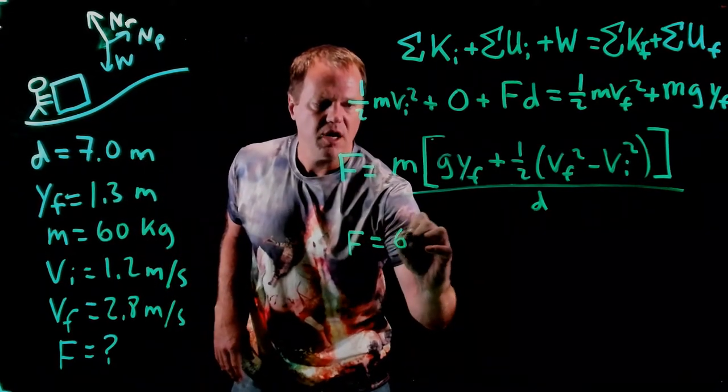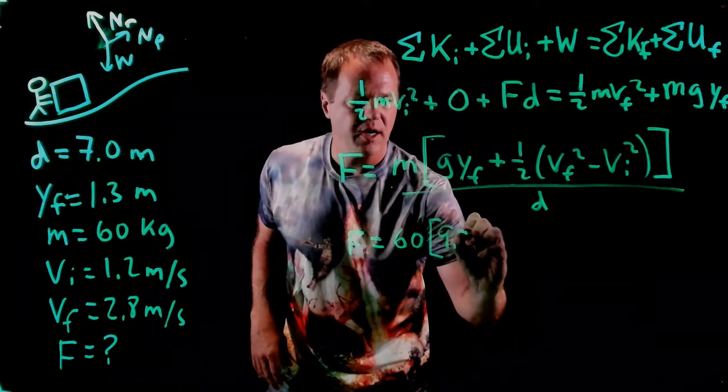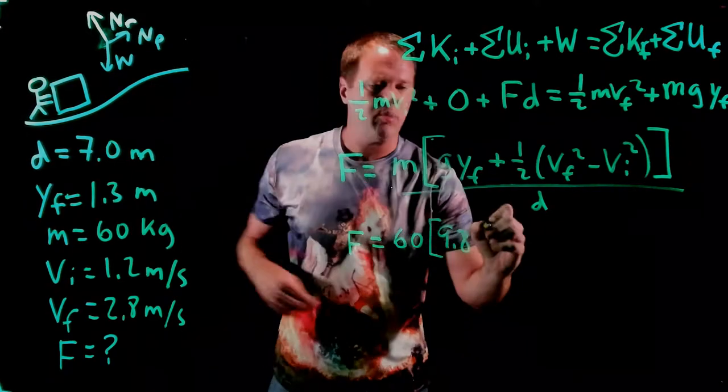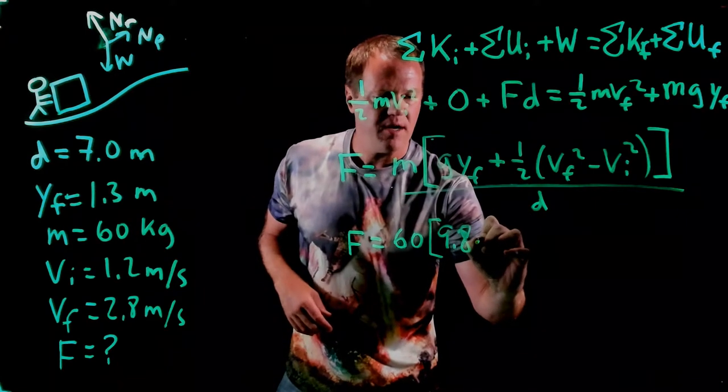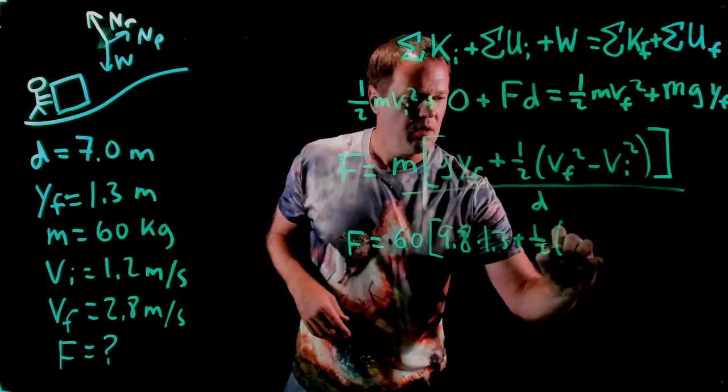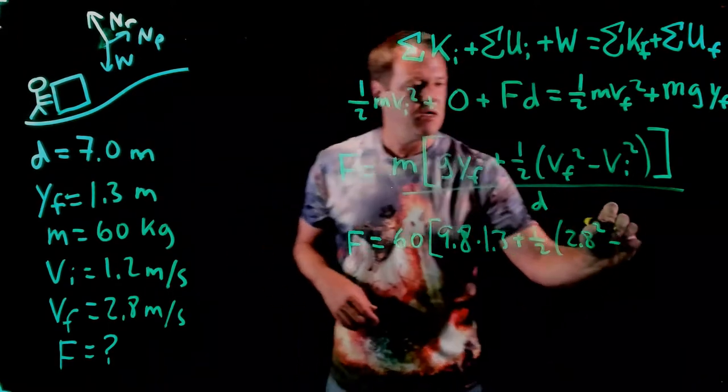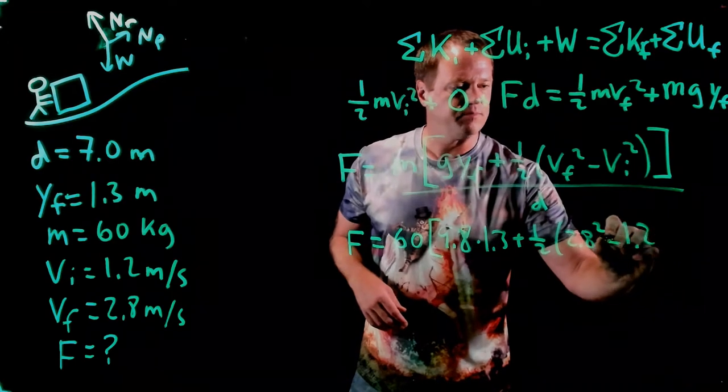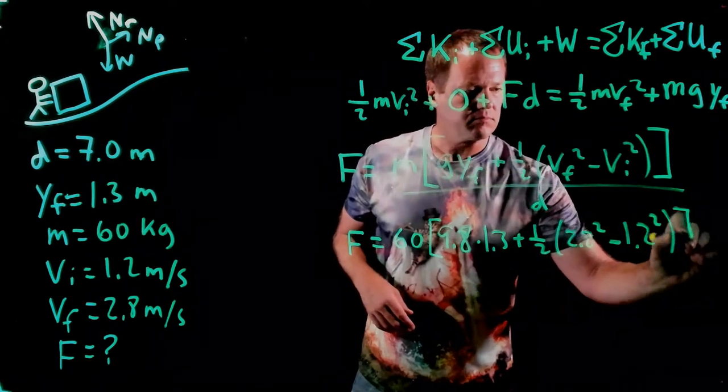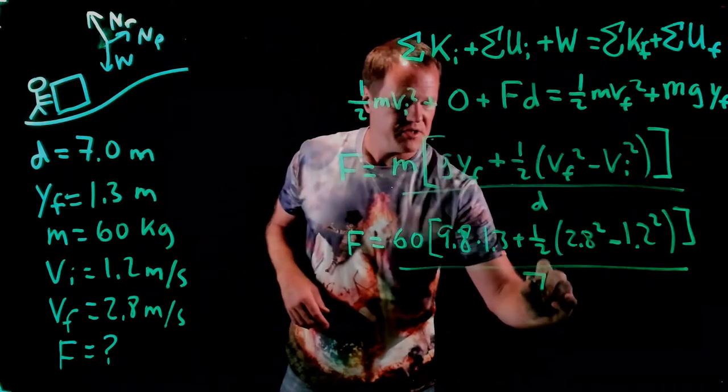So the mass of the block is 60 kilograms. G is 9.8. Height of the ramp is 1.3 meters. Final velocity of 2.8, initial velocity of 1.2, and exerted over a distance of 7 meters.